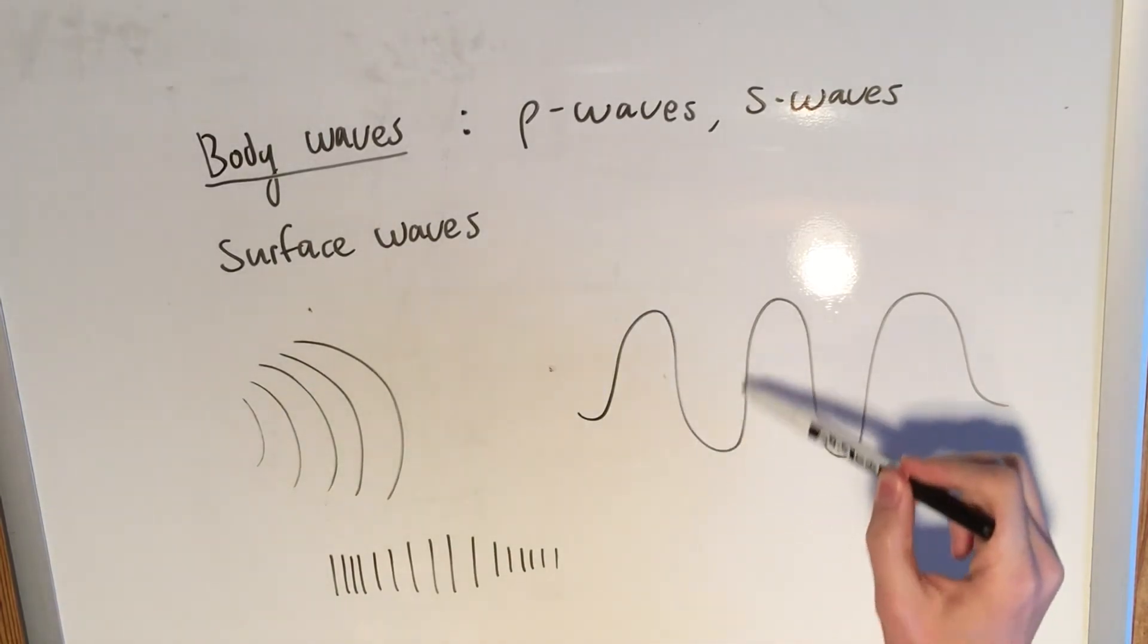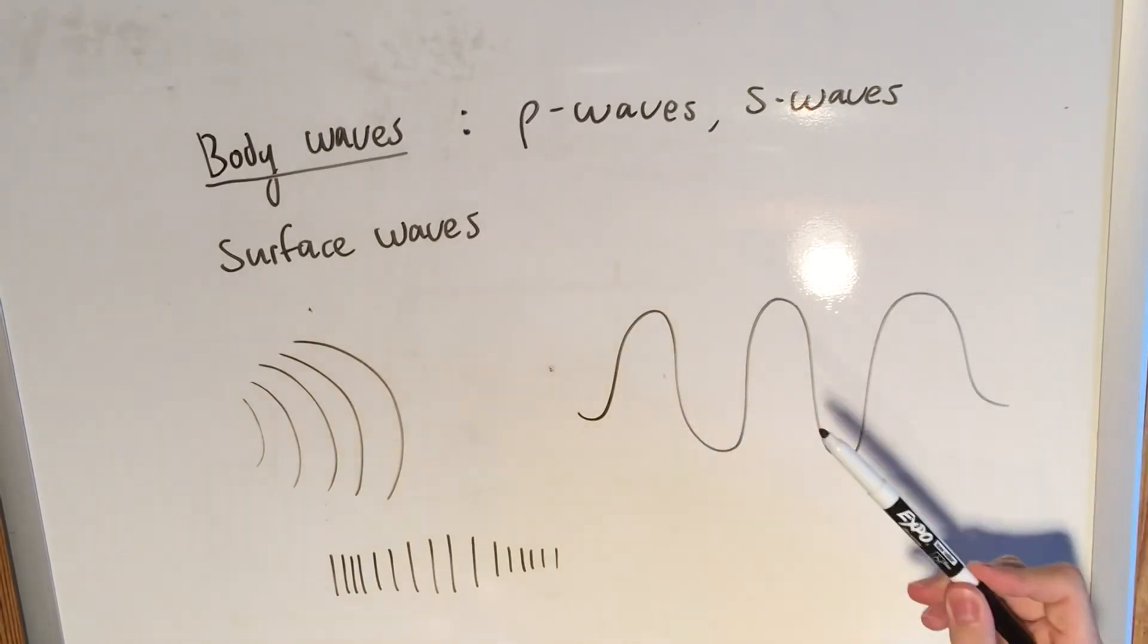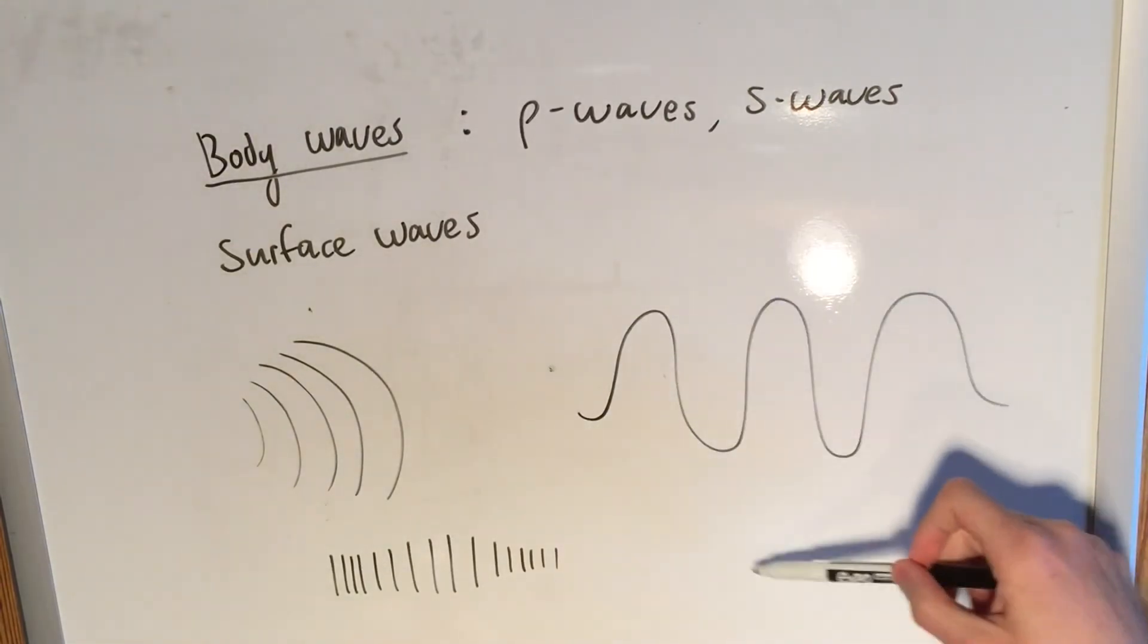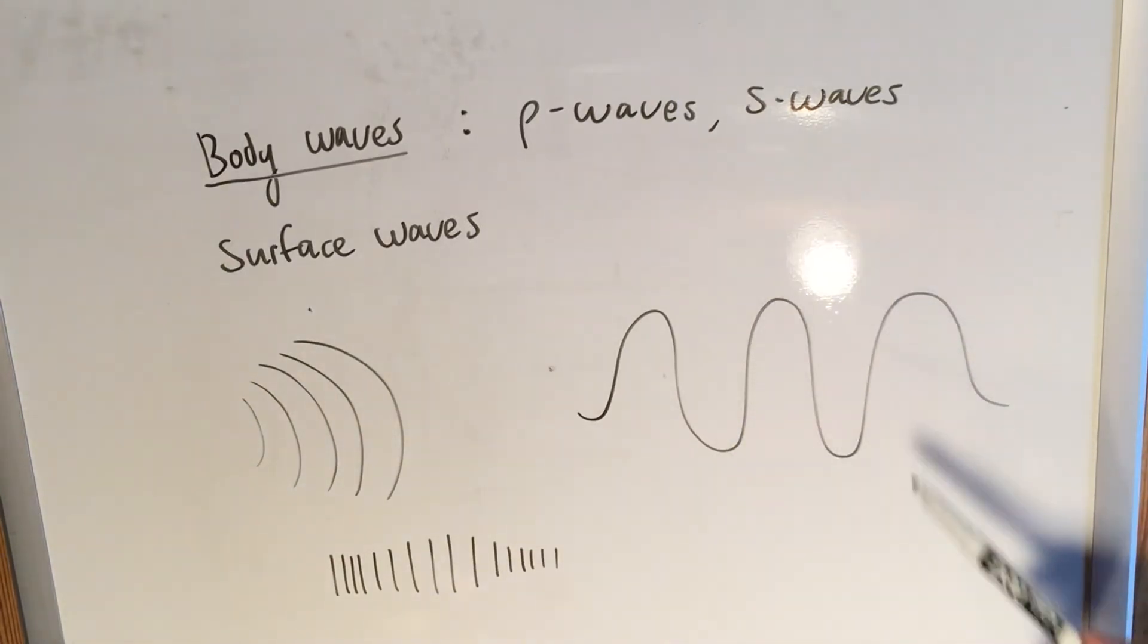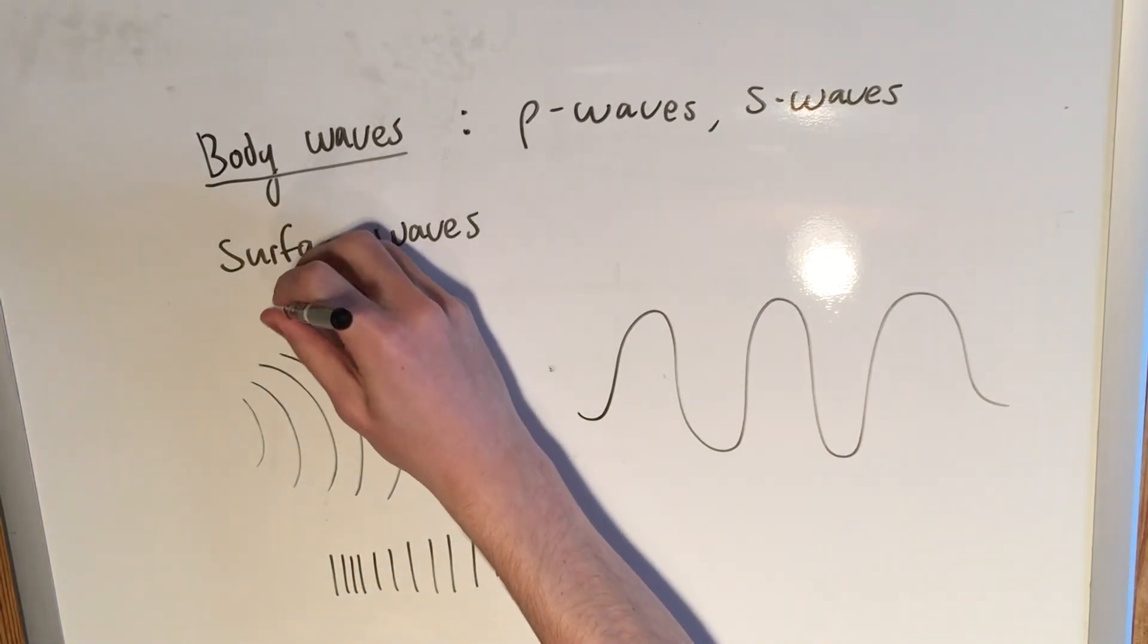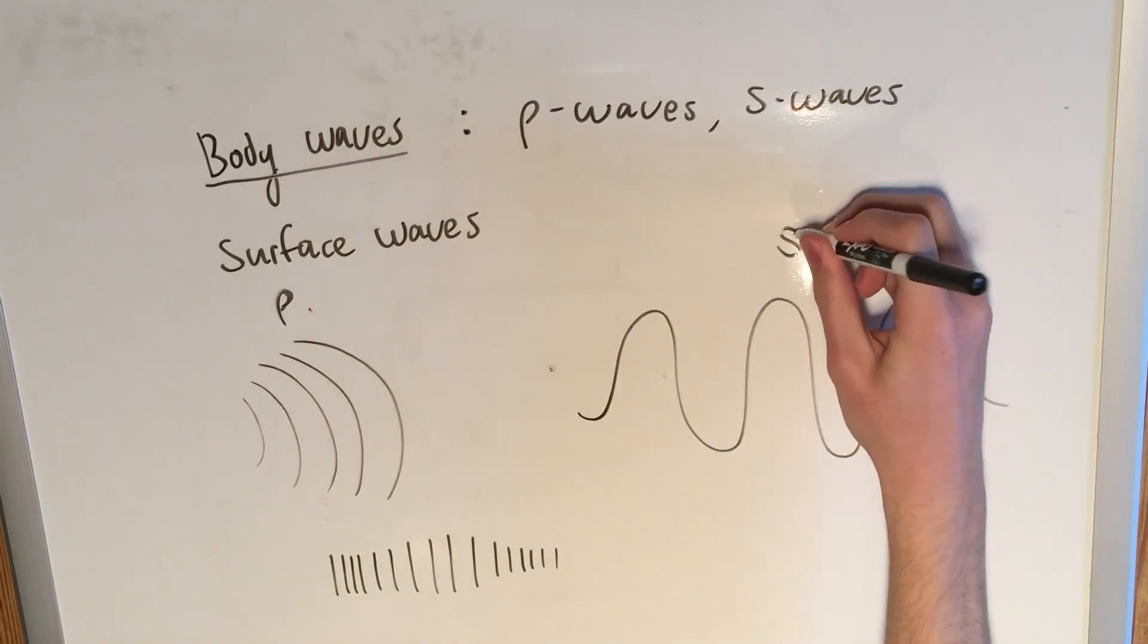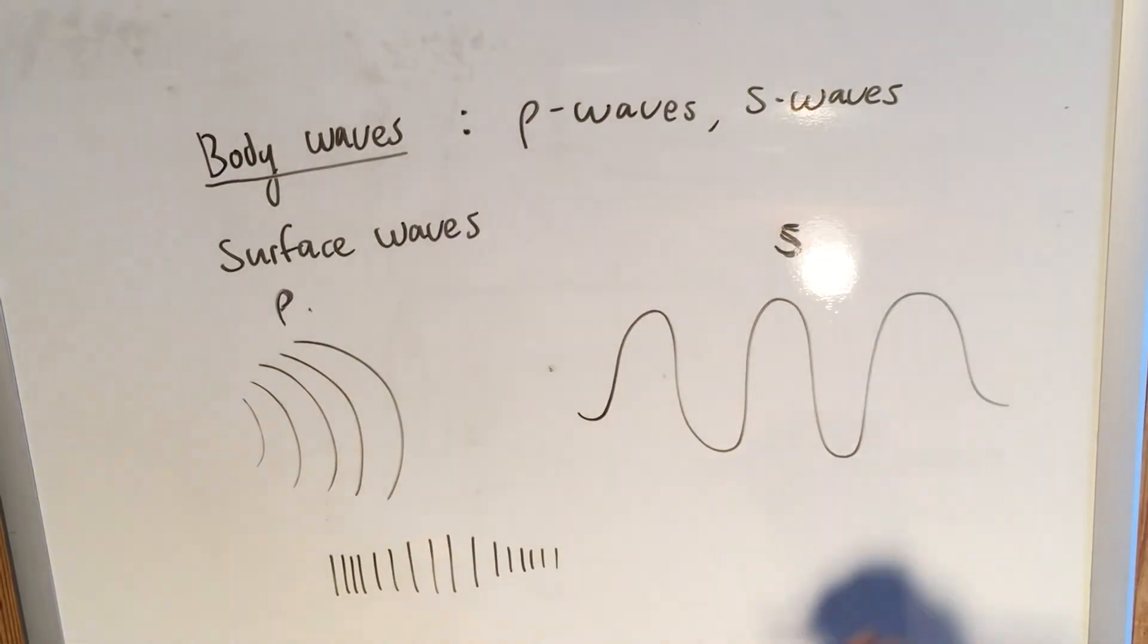Transverse waves move perpendicular. So like with the rope, you're going to see it actually move up and down. With water waves, you're going to see the water roll up as the wave passes through it. So there's the key distinction.